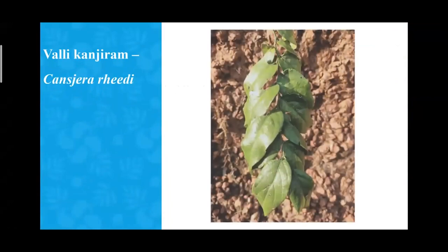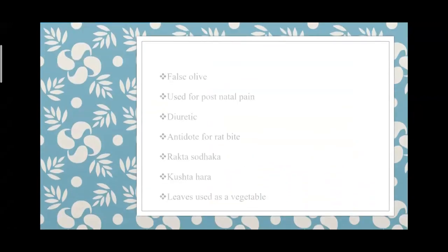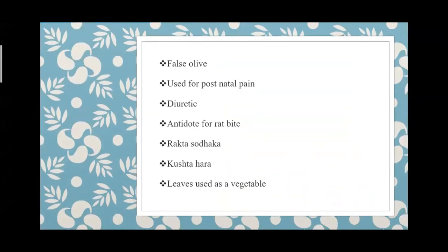Another plant is Carissa — Kali carnivor — also an endemic plant found on laterite ecosystems. It is known as false olive because the fruits are similar to those of olive but ripen to red. It is edible and birds are attracted to the fruits.